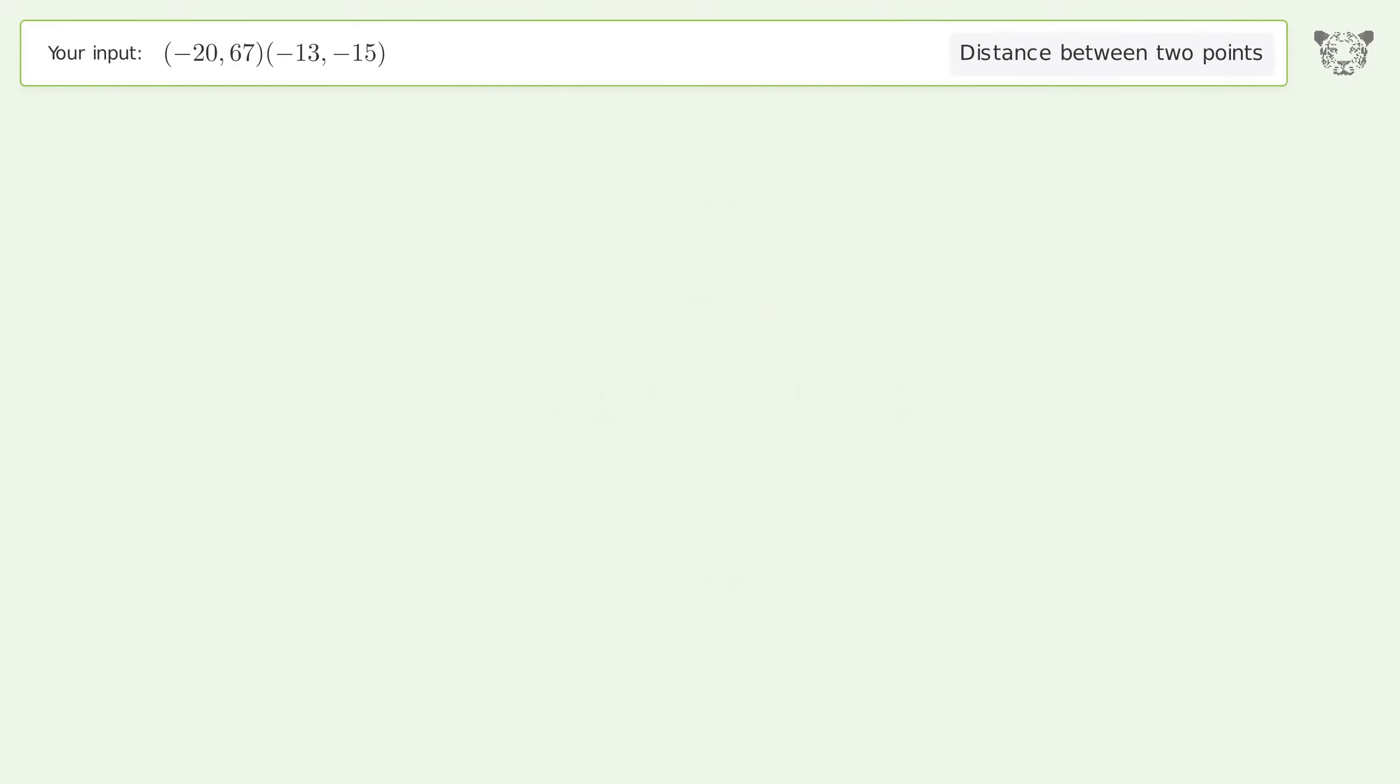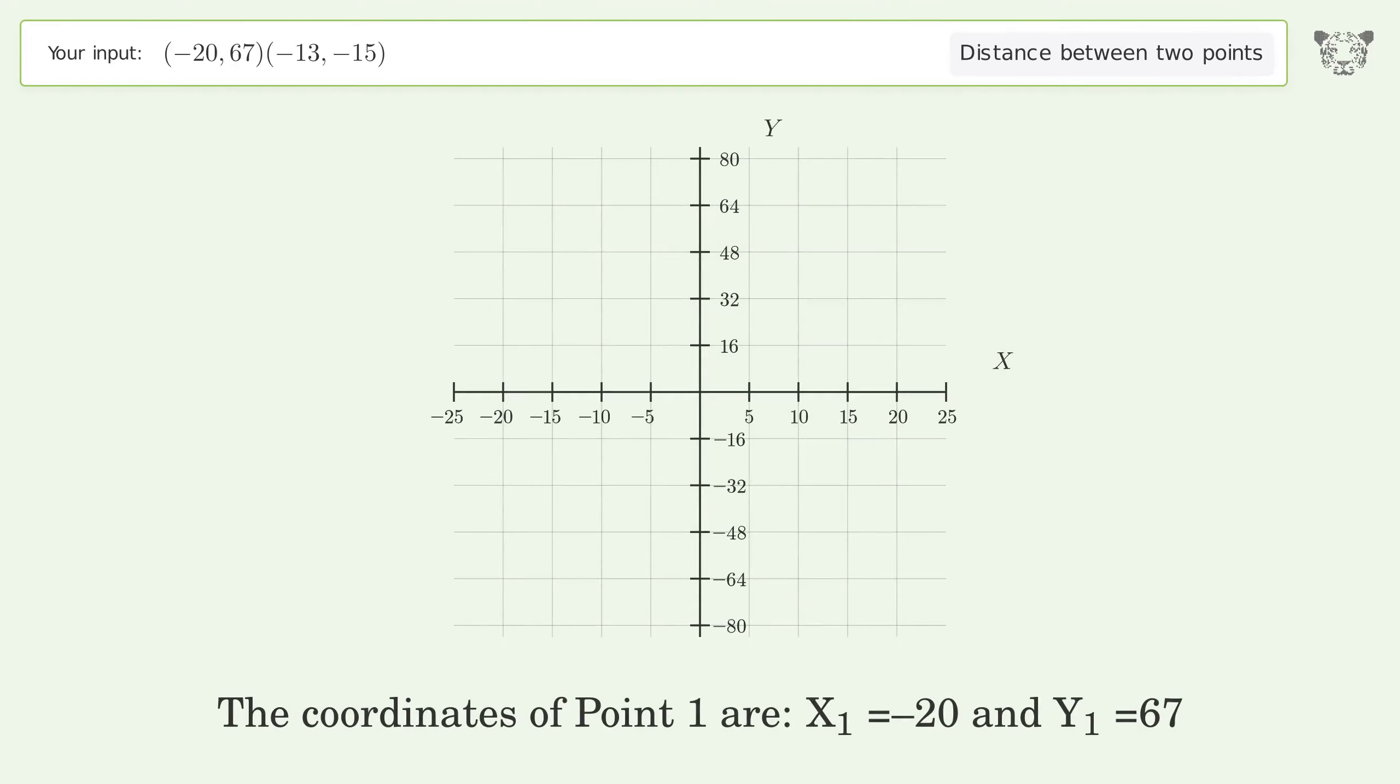Let's solve it step by step. Plot the two points and calculate the distance using the formula. The coordinates of Point 1 are x1 equals negative 20 and y1 equals 67.